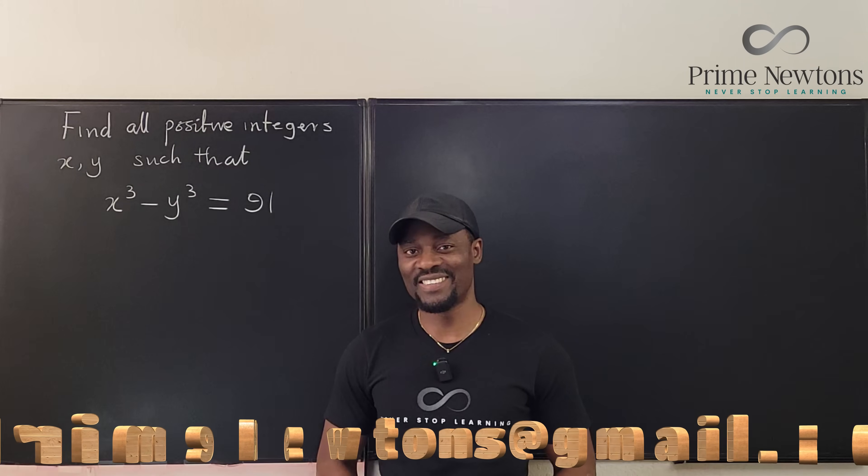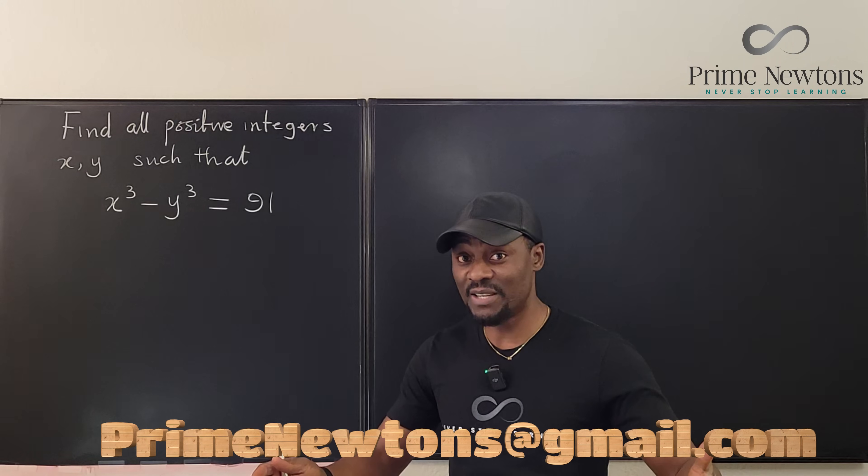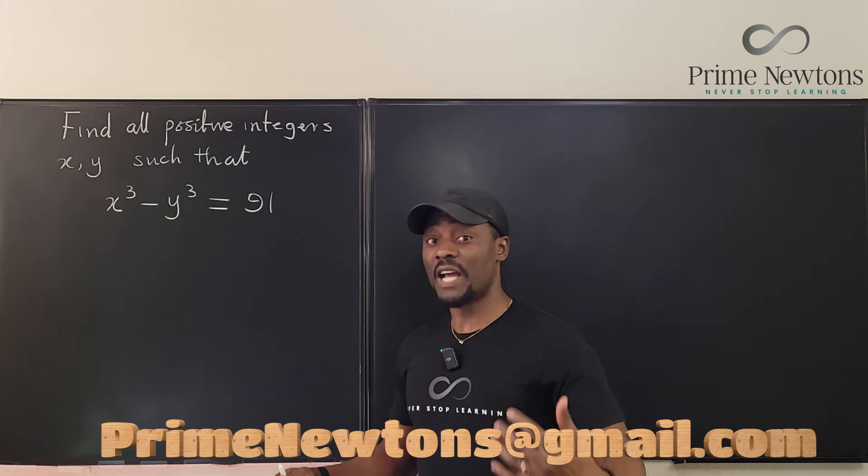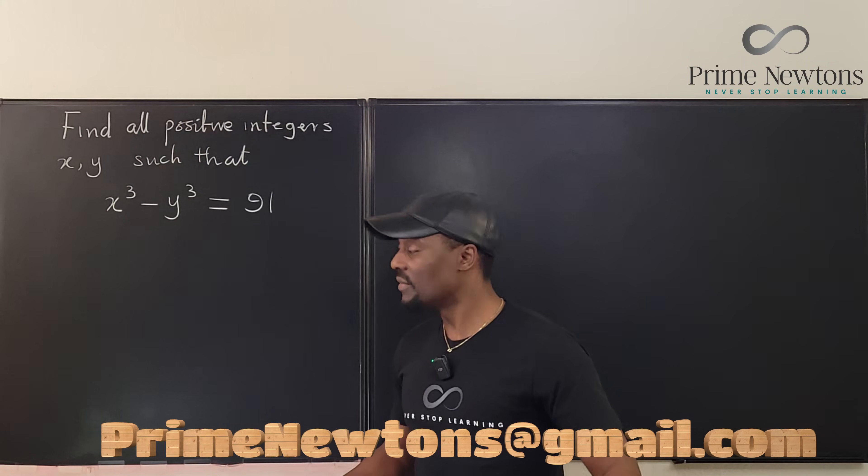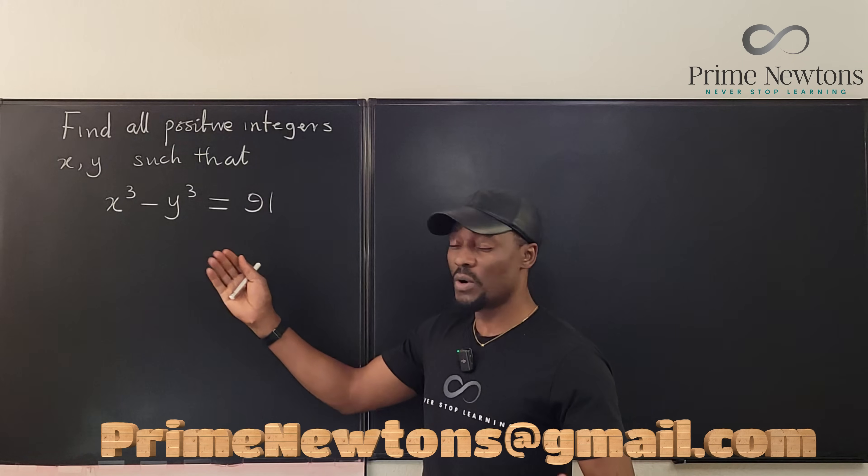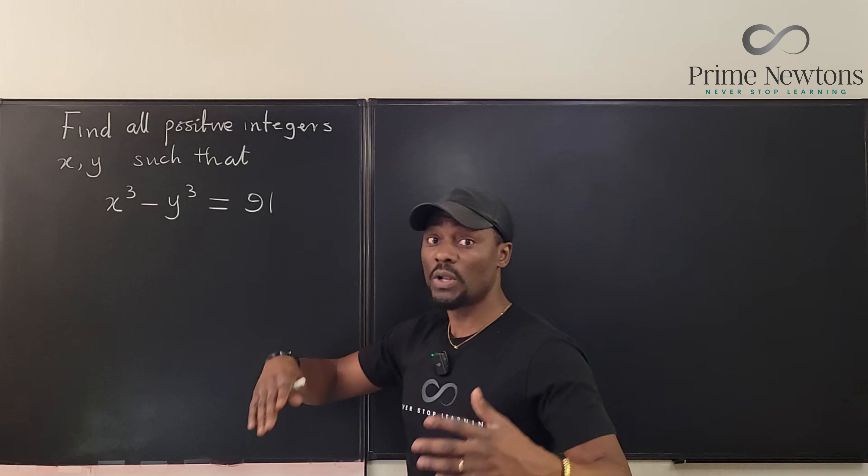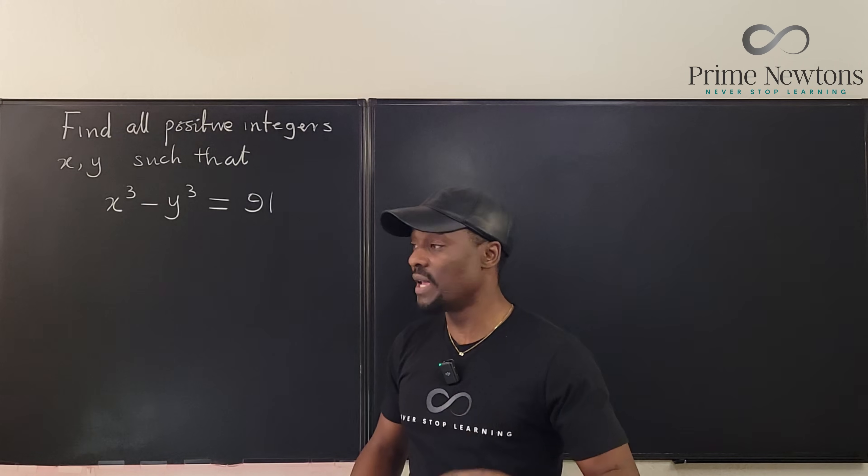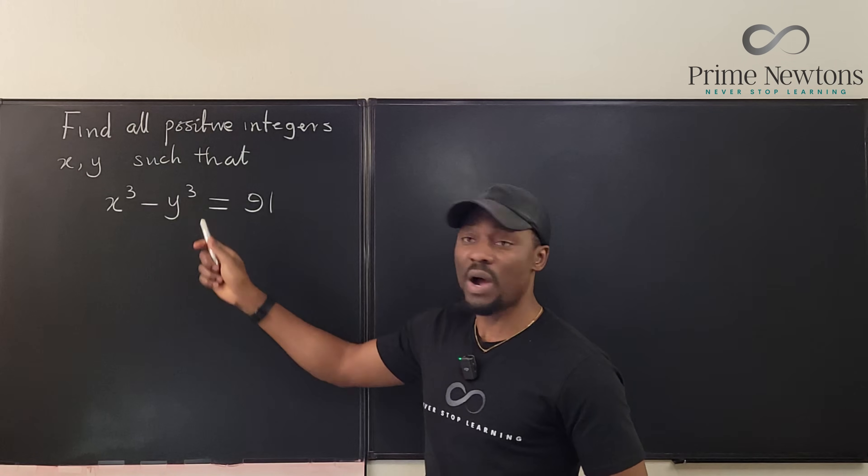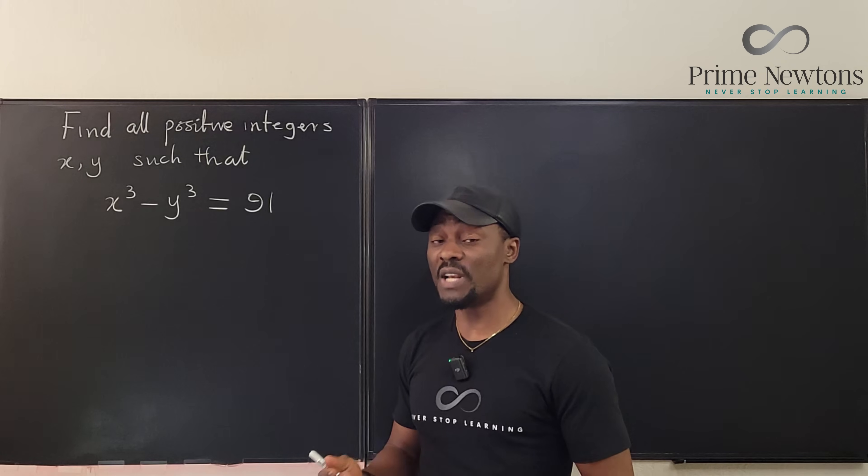Welcome to another video. I have a very easy problem here. It is a Diophantine equation where we solve for only positive integers. So the question is to find all combinations of x and y such that x cubed minus y cubed is going to be equal to 91.